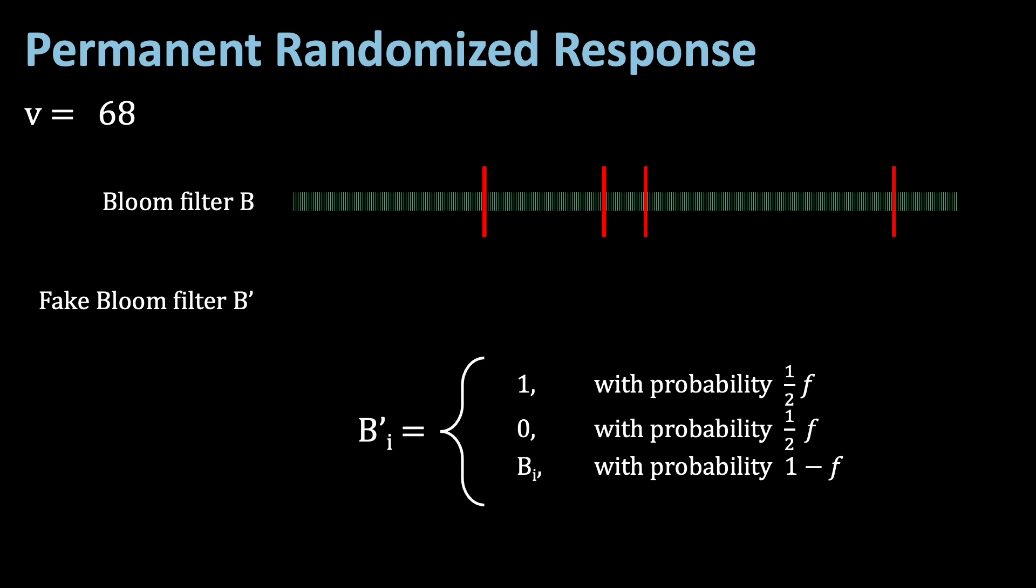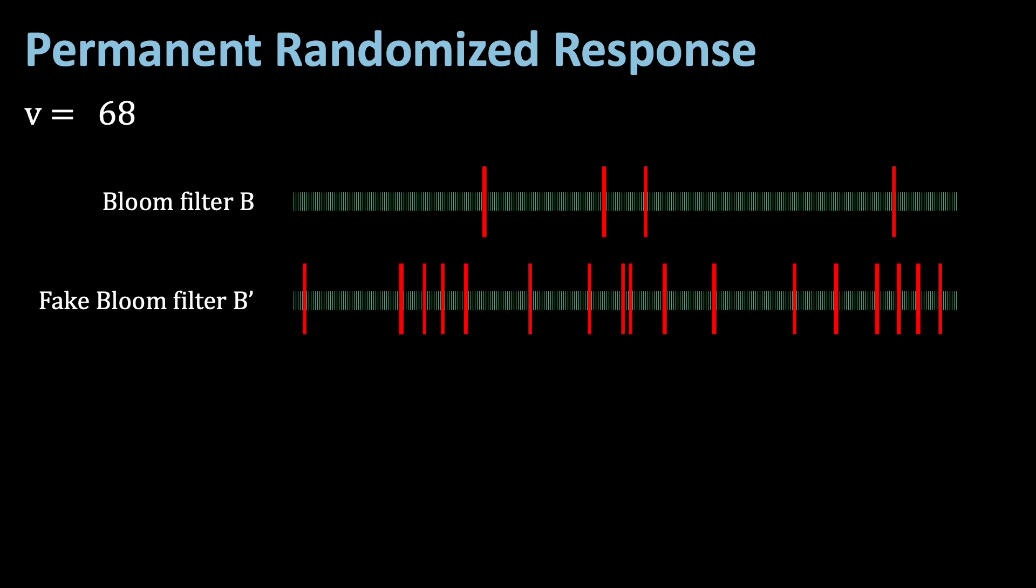In our example, we use an F of 0.5. Let's assume our fake bloom filter, B' looks like this.